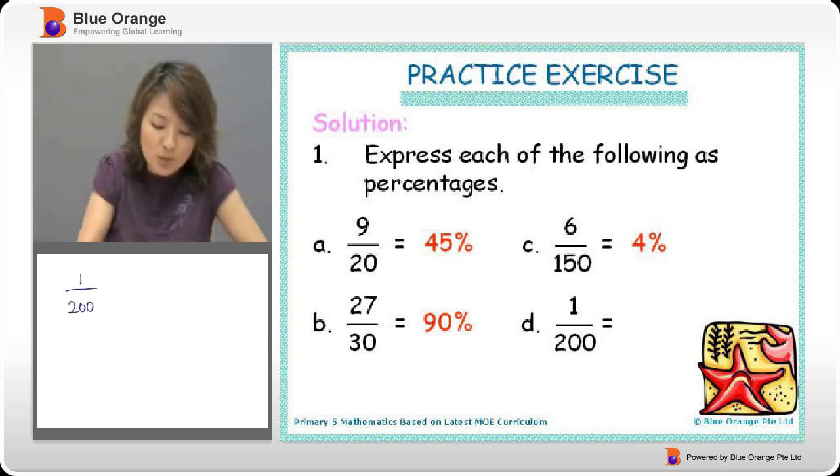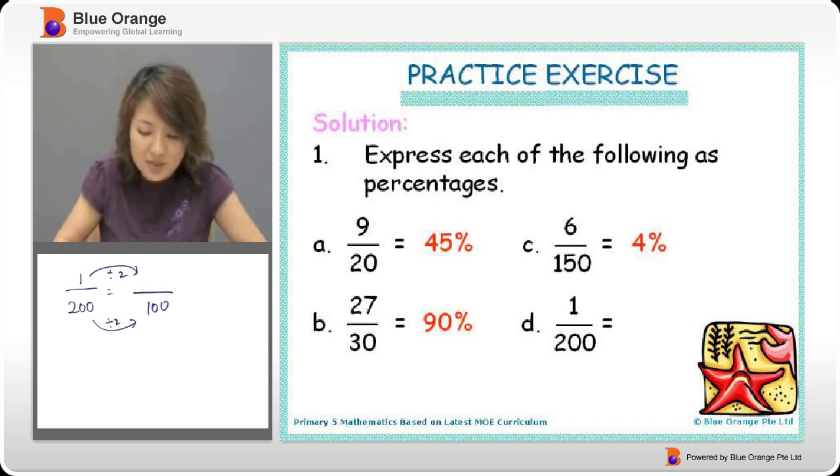In this case, 1 over 200. This is pretty easy. What do we do? Well, we have to change this to 100 by dividing by 2. So here, we also have to divide by 2. 1 divided by 2 gives me 0.5.